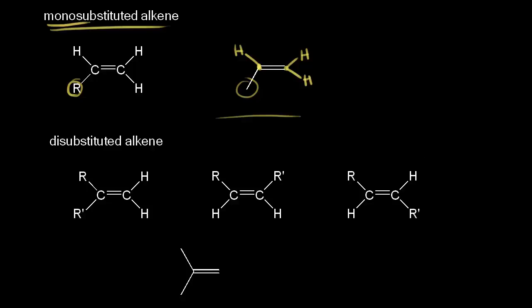If I want to name this alkene, we make this carbon one, this is carbon two, and this is carbon three — the longest carbon chain including our alkene. A three-carbon alkene is called propene, so this is propene.